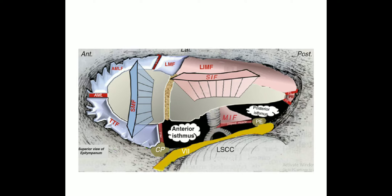In the superior view of the epitympanum, we can see the remaining eight mucosal folds: the anterior malleal ligamental fold between the neck of the malleus and the attic; the lateral malleal ligamental fold again between the neck of the malleus and the attic; the superior malleal fold between the superior surface of the malleus and the tegmen; the superior incudal fold between the superior surface of the incus and the tegmen; the lateral incudomalleal fold between the incus and the attic; the posterior incudal fold; the medial incudal fold between the long process of the incus and the tendon of the stapedius muscle; and the tensor tympani fold between the tensor tympani tendon and the anterior attic wall.